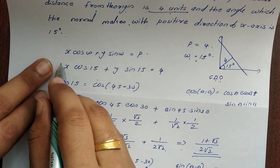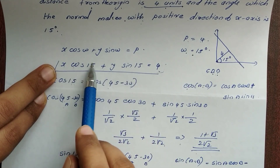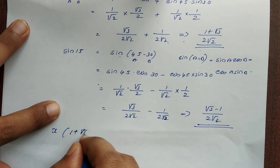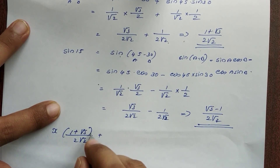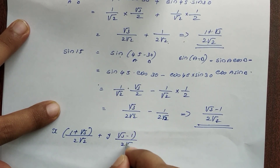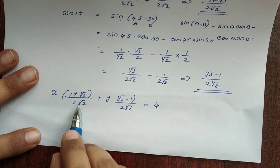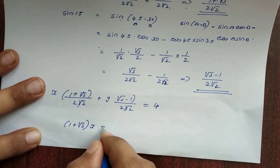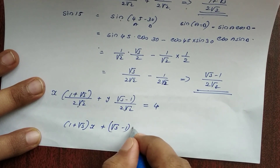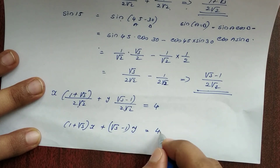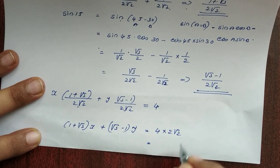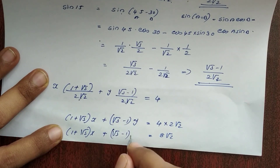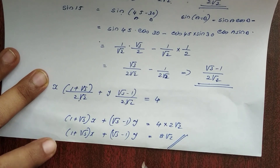So these are the values we can substitute. The equation becomes: x into (1 plus root 3) divided by 2 root 2, plus y into (root 3 minus 1) divided by 2 root 2, equals 4. Multiplying both sides by 2 root 2, we get 4 into 2 root 2, that is 8 root 2. So the equation of the straight line is: (1 plus root 3) x plus (root 3 minus 1) y equals 8 root 2.